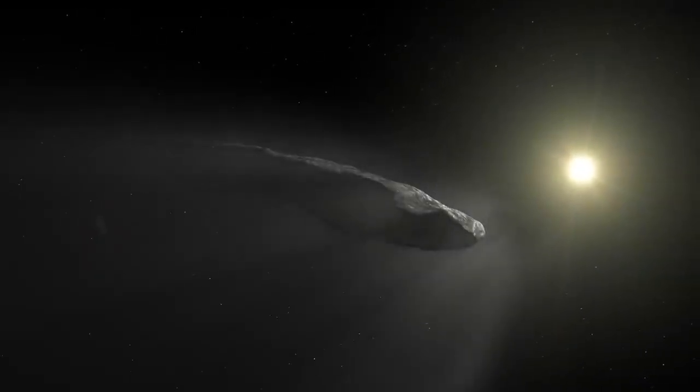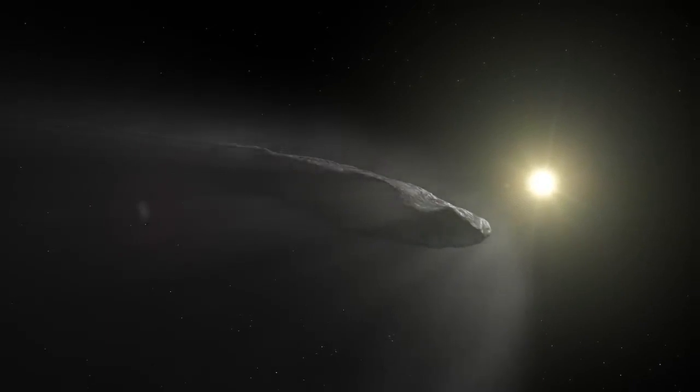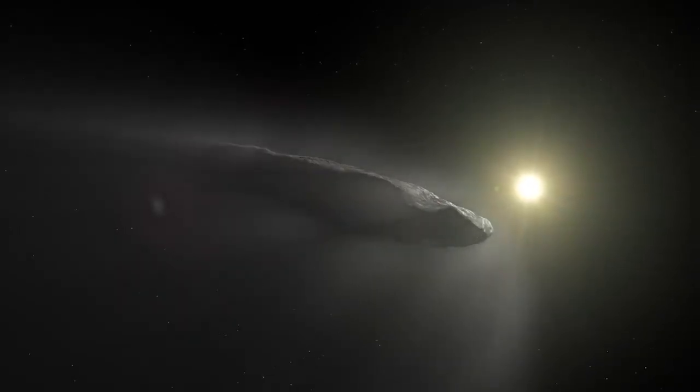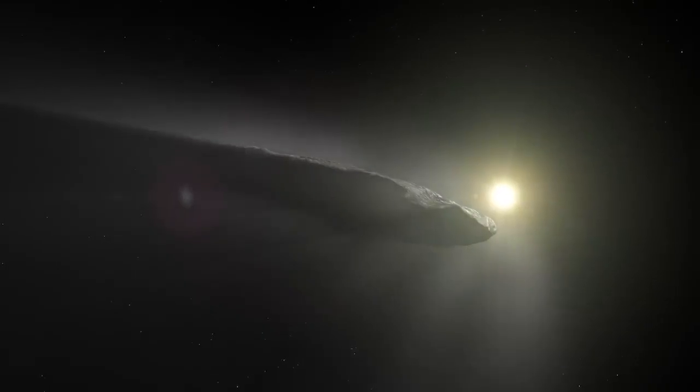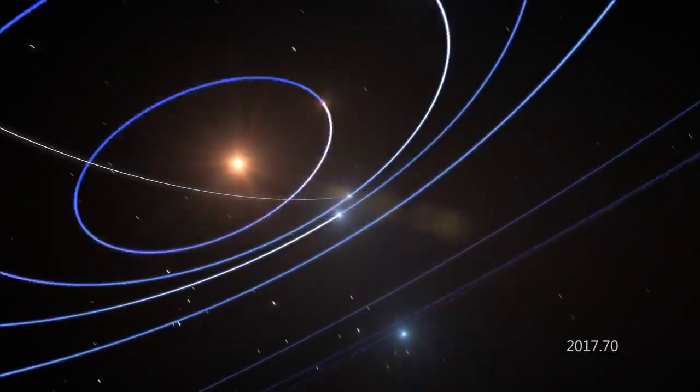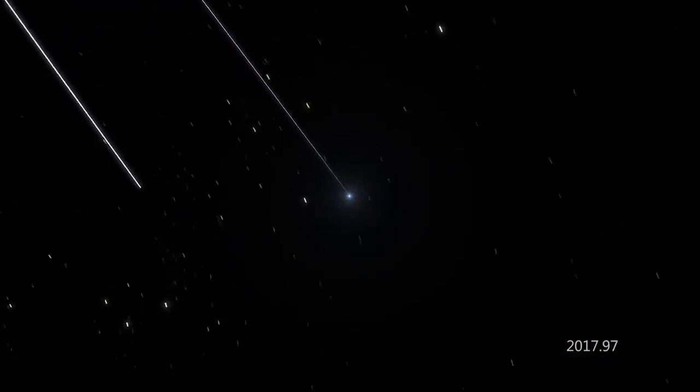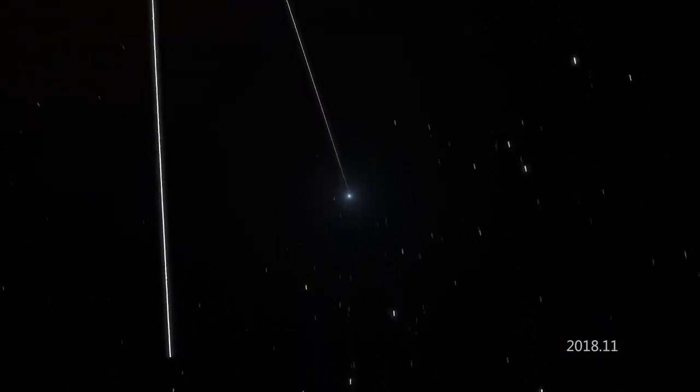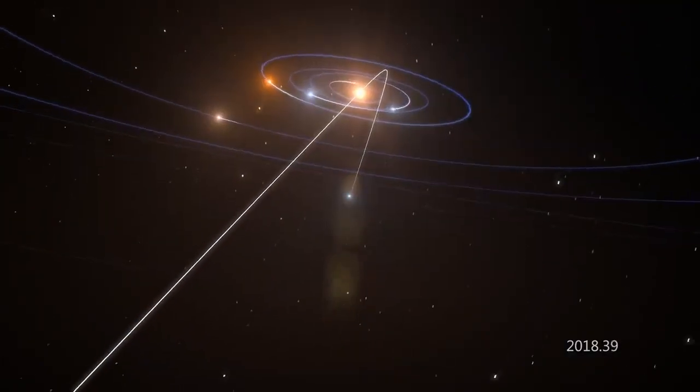The telescope has also captured observations of some special interstellar visitors. In 2018, Hubble studied Oumuamua, the first interstellar object discovered in the solar system. In cooperation with other ground-based telescopes, it was determined that the object was likely a comet and was moving away from the Sun faster than previously expected.